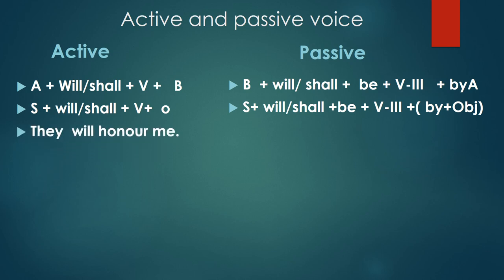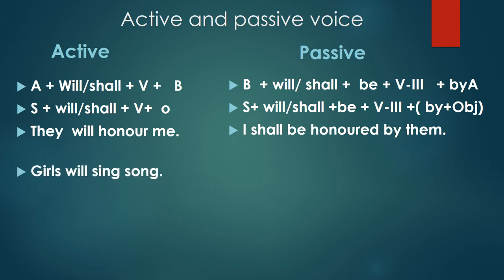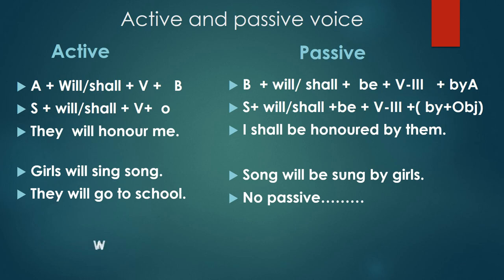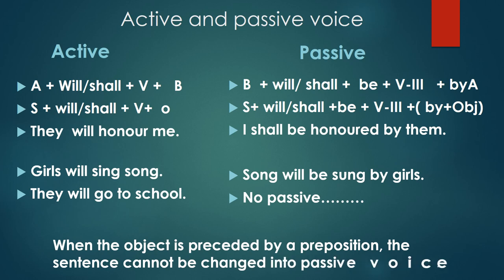'They will honor me' — we mayra samman karenge. Passive: 'I shall be honored by them' — mein unke dwarah sammanit kiya jaunga. Note: 'they' takes 'will' and 'I' takes 'shall'. 'Girls will sing song' — lardkiyaan gana gahengi. Passive: 'Songs will be sung by girls' — gana lardkiyong ke dwarah gahya jayega. 'They will go to school' — iska passive voice nahi banega. When the object is preceded by a preposition, the sentence cannot be changed into passive voice. Here 'to' precedes 'school', so no passive voice.